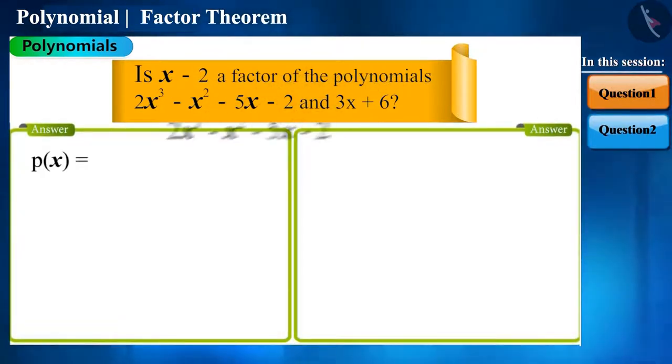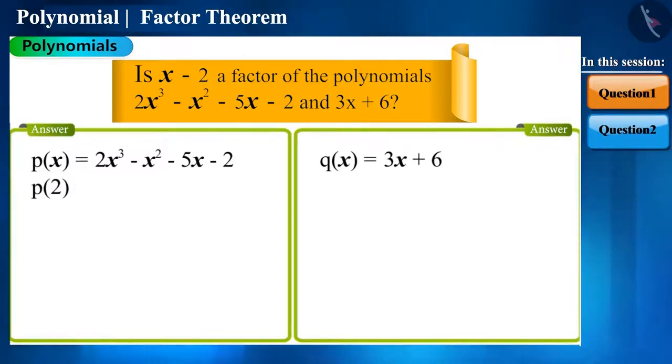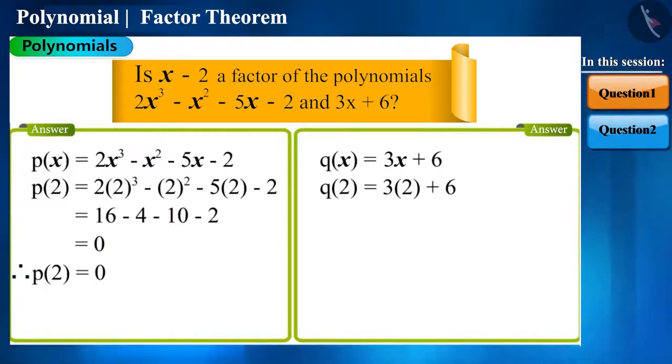That is, if we write both these polynomials this way, we have to check whether p of 2 and q of 2 are 0 or not. So let's check. In both the polynomials, x has to be replaced by 2. And now we get p of 2 is equal to 0 and q of 2 is equal to 12.